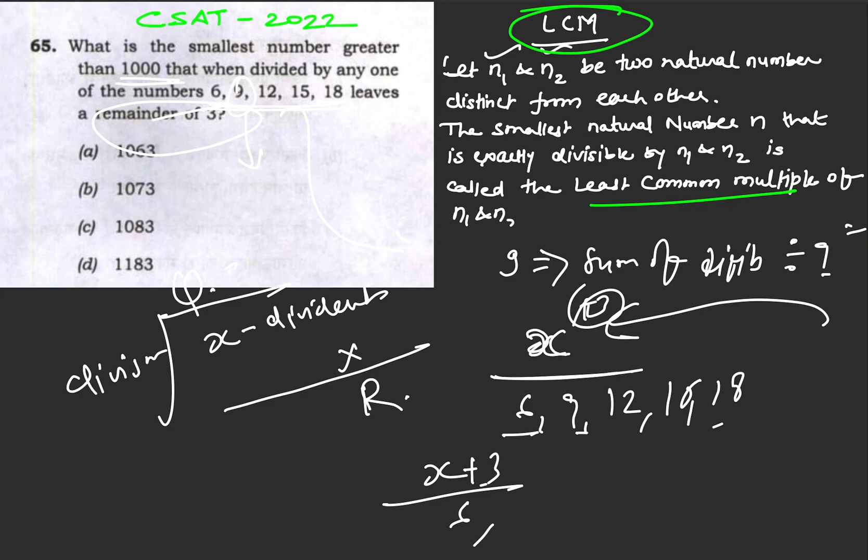That means we have to subtract 3 from each option and check the divisibility. So for 1063 minus 3, we get 1060.